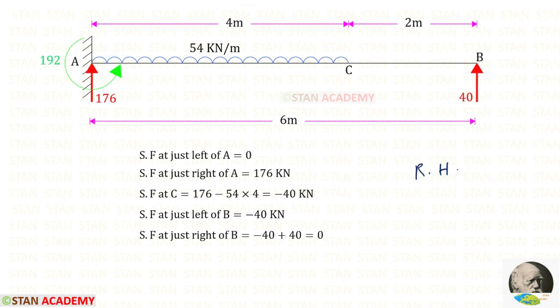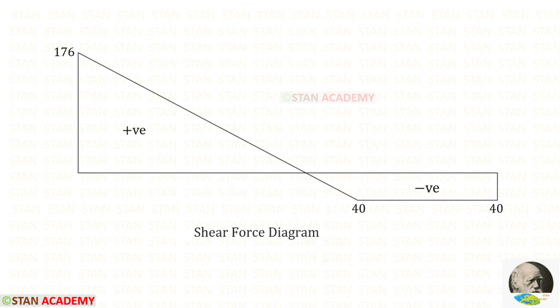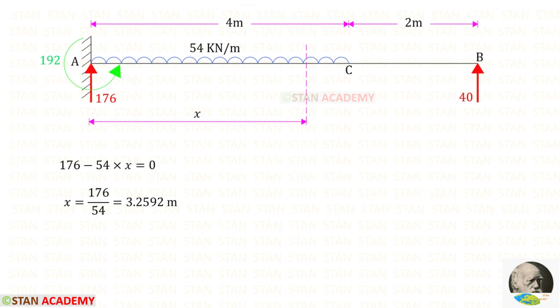Now using the right-hand side rule, we can find the shear force values. Here you can see the shear force diagram. At a certain point, the shear force becomes 0. At that point, there will be the maximum positive bending moment. Let us make a section at that point, at a distance x from point A, and use the condition that shear force equals 0 to find x.